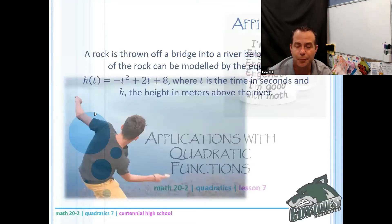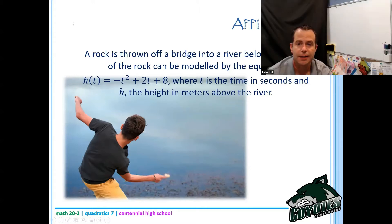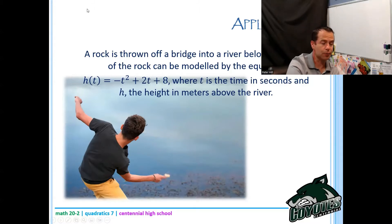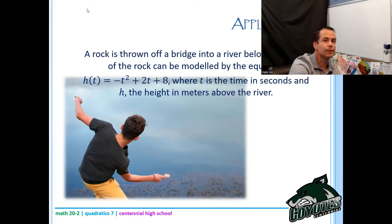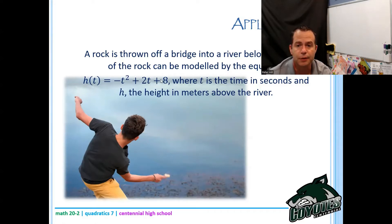A rock is thrown off a bridge into a river below. The path of the rock can be modeled by the equation h of t equals negative t squared plus 2t plus 8, where t is the time in seconds and h the height in meters above the river. We're going to go question by question and figure out how to answer each. Before we do that, let's put this in our graphing calculator and get a decent picture of it.